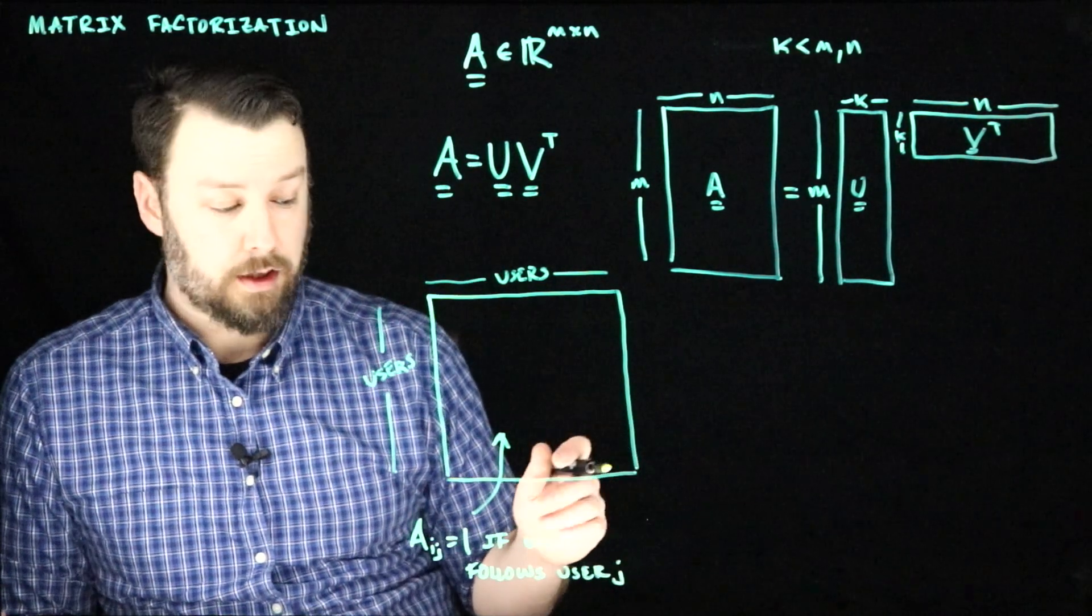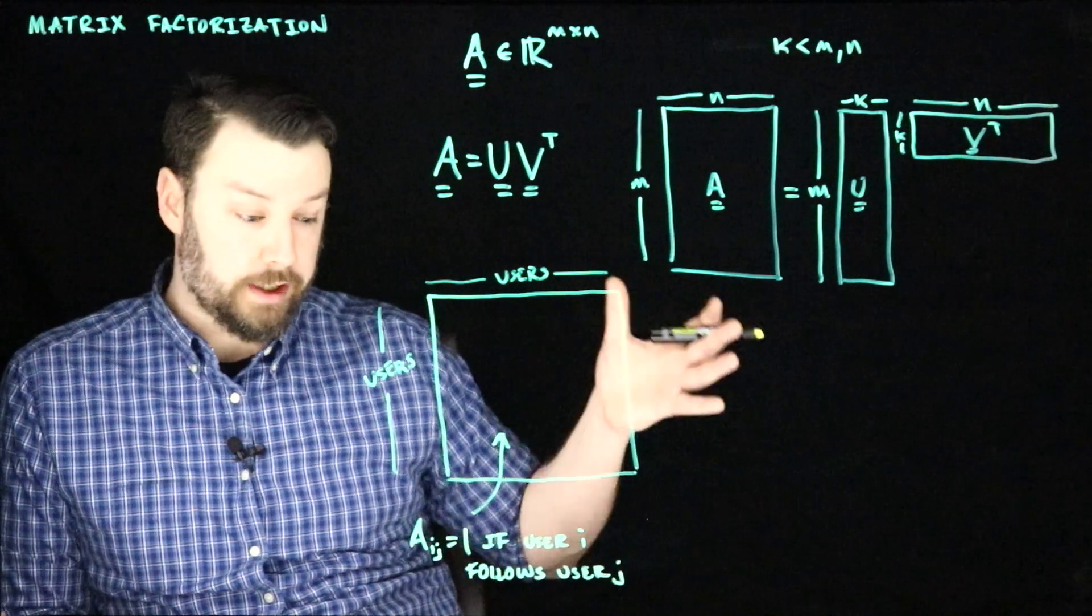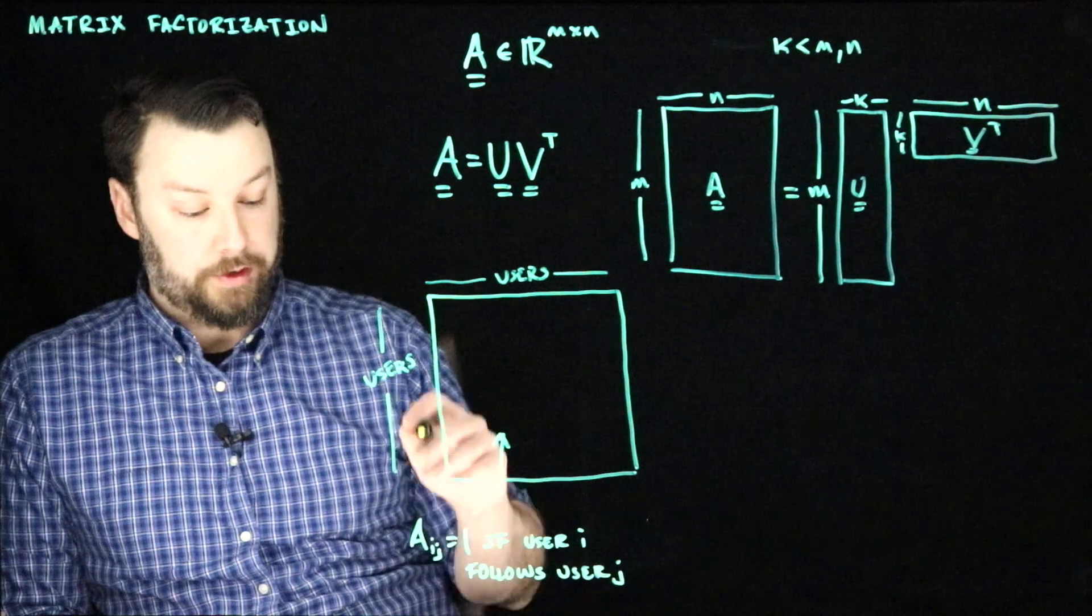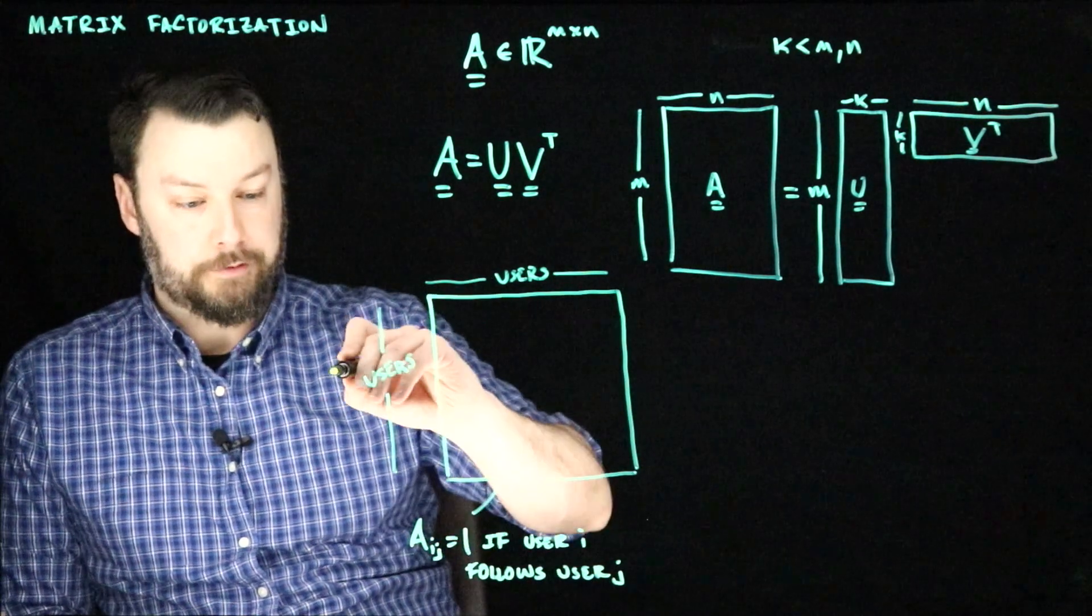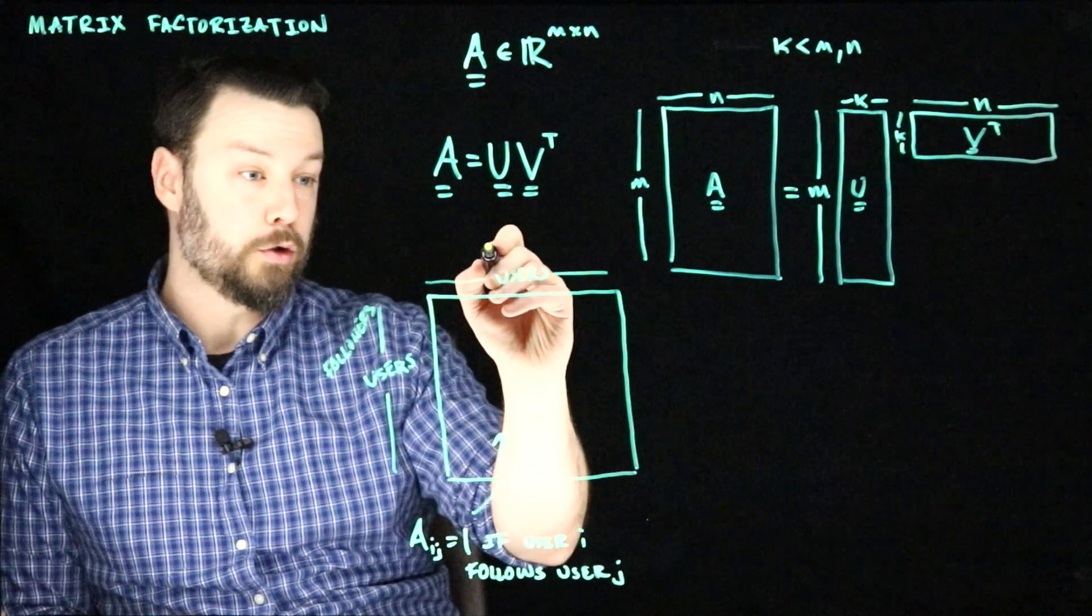And otherwise it's 0. So this is the adjacency matrix of the directed follow graph, say on Instagram or Twitter. And so the rows are followers and the columns are followees.